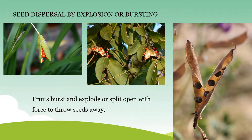Seed dispersal by explosion or bursting. Some fruits burst and throw seeds out with some speed so that they can fall on the ground at a little distance away from the parent plant and grow into new plants. This kind of dispersal is observed in peas, lady's finger, mustard, and balsam. Some fruits also split open to throw the seeds away so that they can grow into new plants.